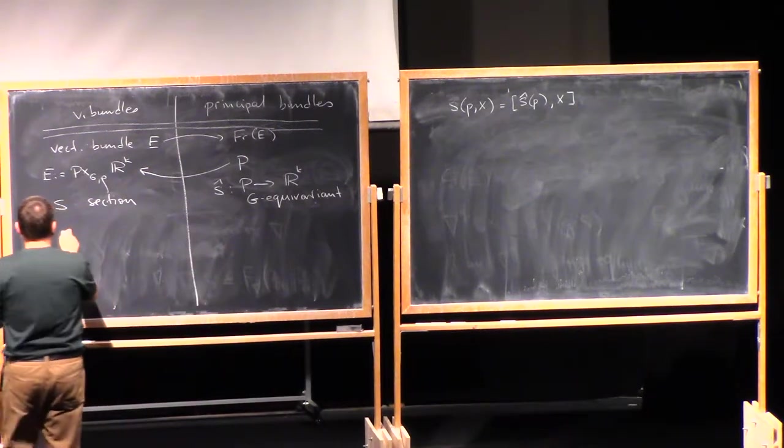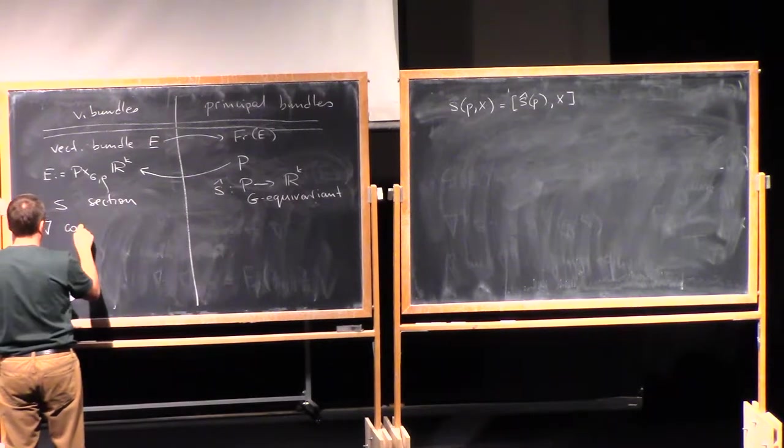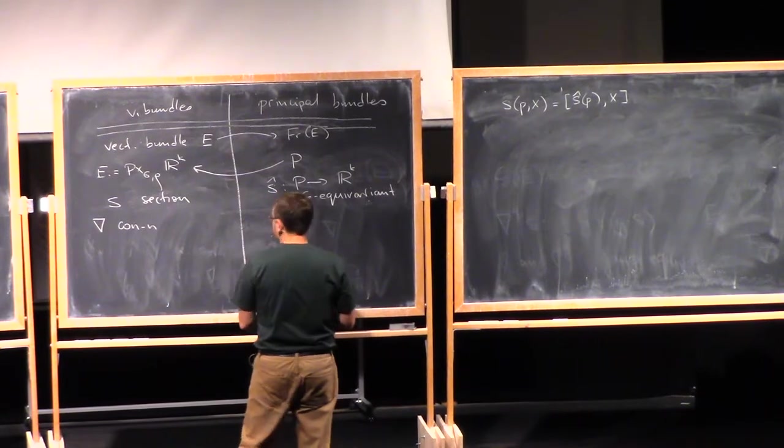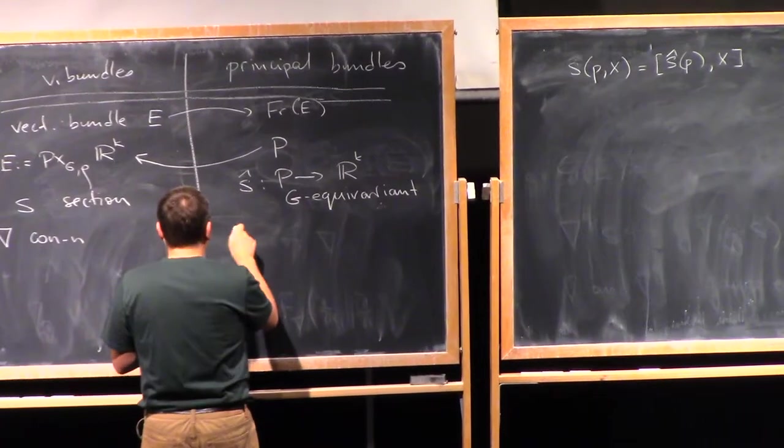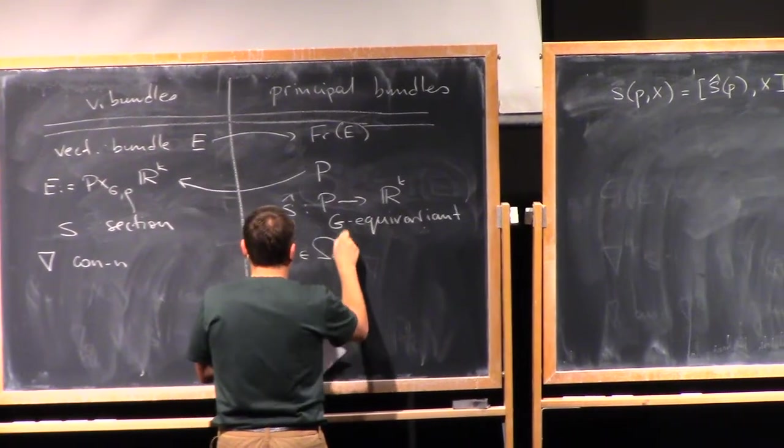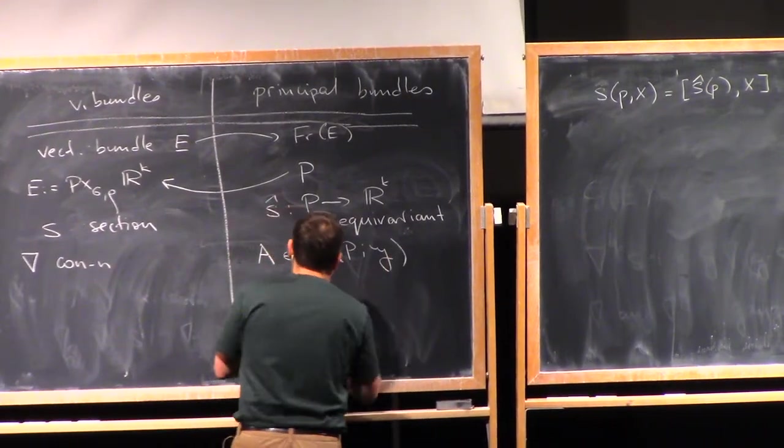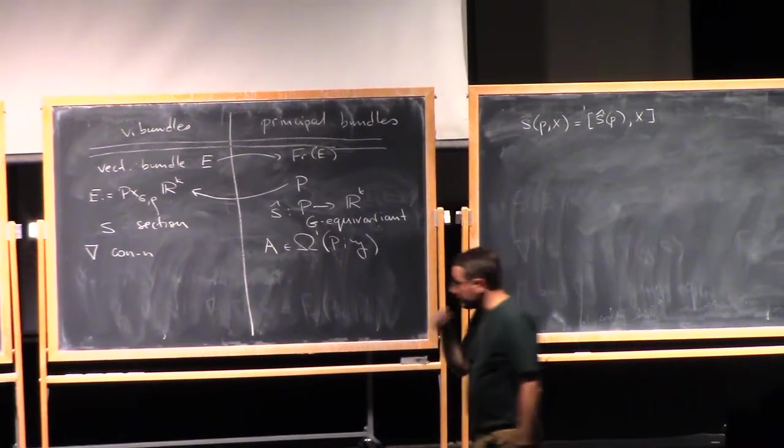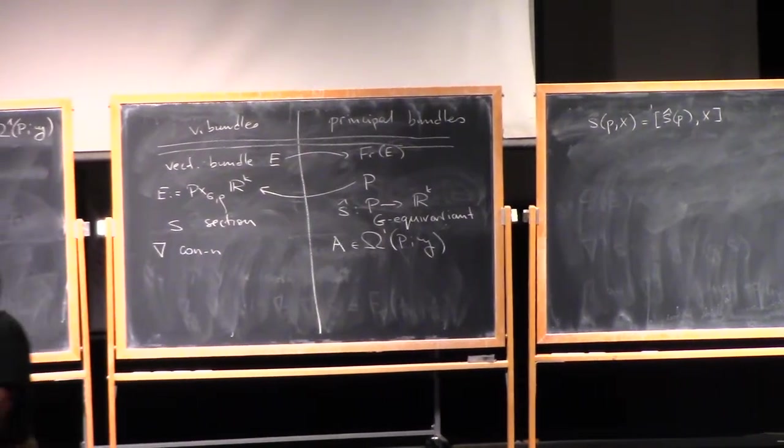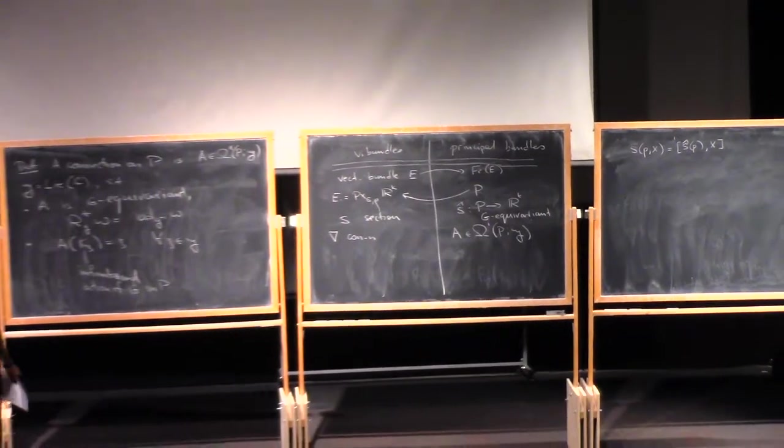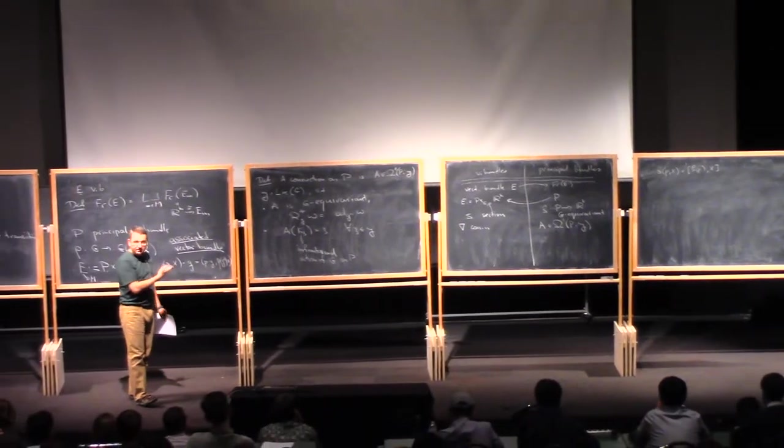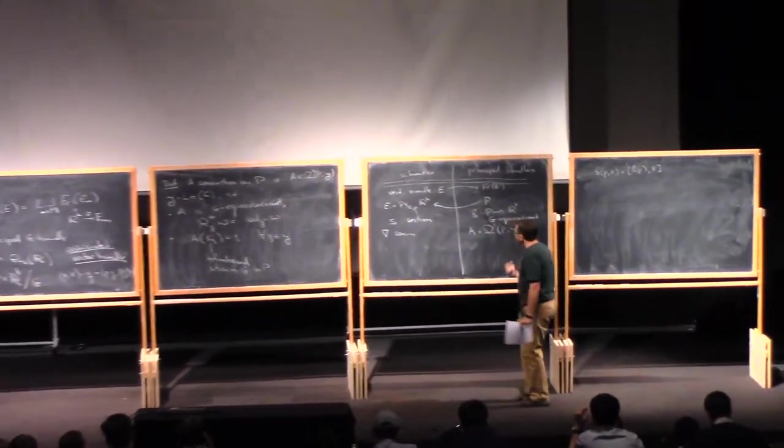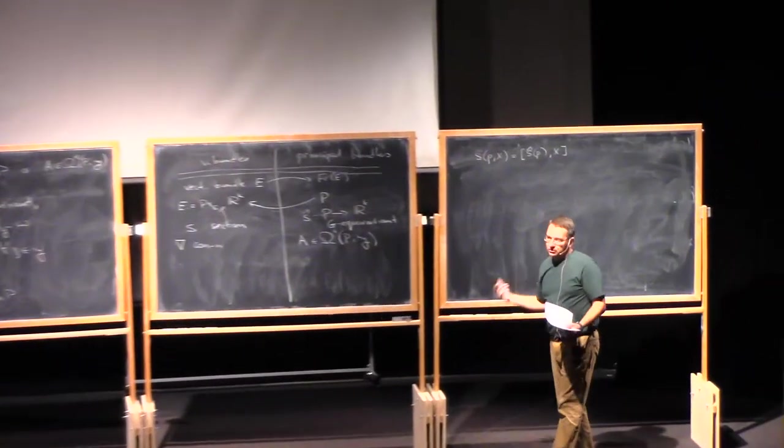Now, if you have a connection nabla on a vector bundle, this gives us a connection on the principal bundle, so let me denote this by A in omega^1(P,g). In the standard way, if you have a local trivialization of your vector bundle, a connection becomes a one-form with values in the Lie algebra, and this is exactly what you have. But if you look at this globally, what you get is a one-form on the total space of P, rather than just a bunch of local one-forms.